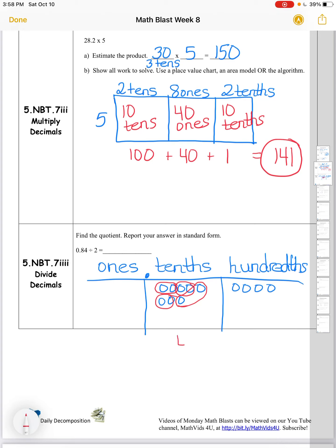In the hundredths column, again, I'm going to make groups of two. And here I was able to make two groups of two. And there were none in the ones. So my answer, my quotient, is 42 hundredths. That's all for today, math friends.